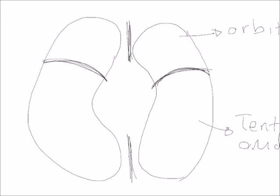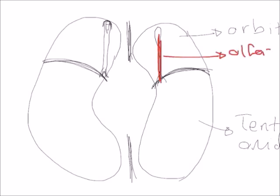On the orbital surface, which lies in front of the stem of the lateral fissure, there is a structure called the olfactory bulb. The olfactory bulb extends to the anterior frontal pole of the brain and has the function of olfaction. It runs in a sulcus called the olfactory sulcus, and inside this sulcus you can identify the olfactory bulb.